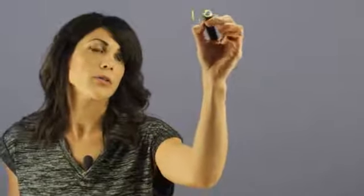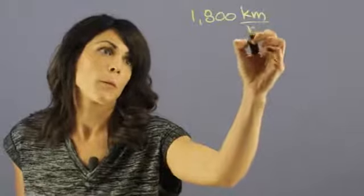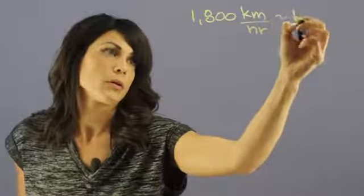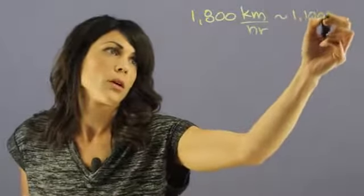So Saturn has really violent winds, a gas giant, and the observed winds in the upper atmosphere can go up to 1,800 kilometers an hour. This is about 1,100 miles an hour.